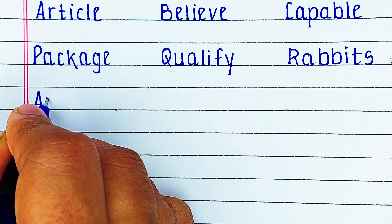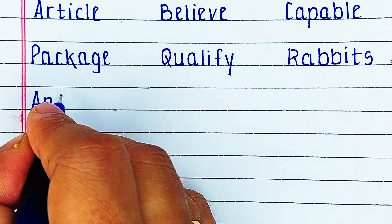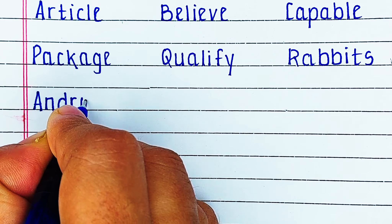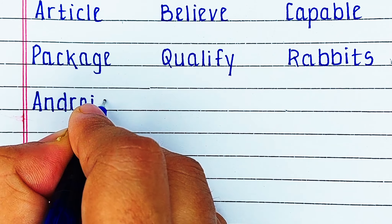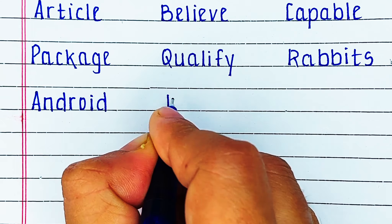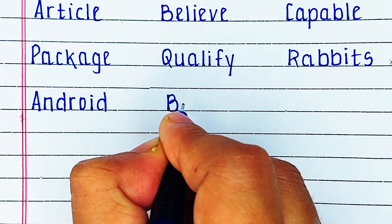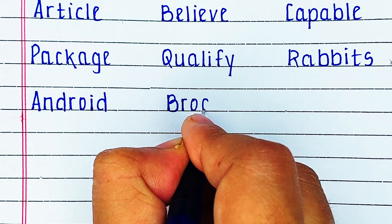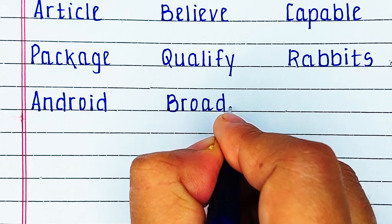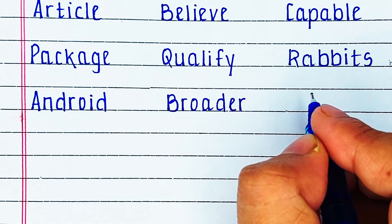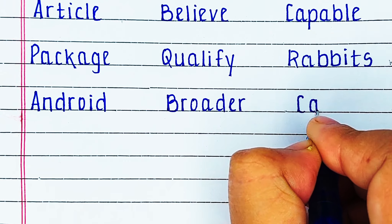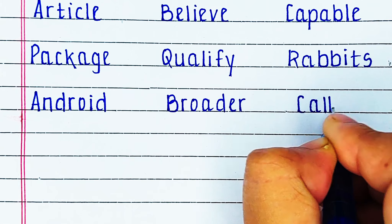Next word is A N D R O I D, android. Next word is B R O A D E R, broader. Next word is C A L L I N G, calling.